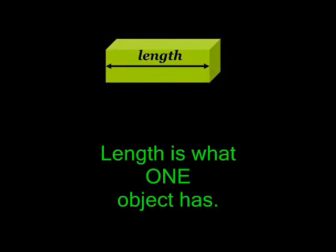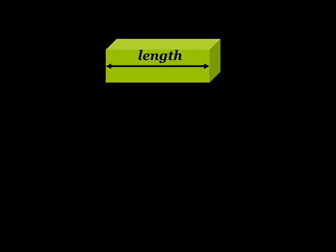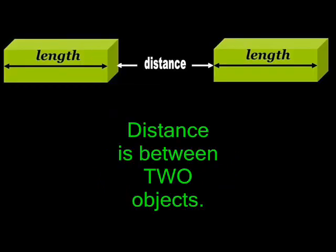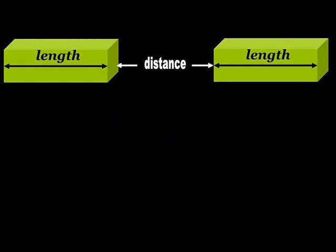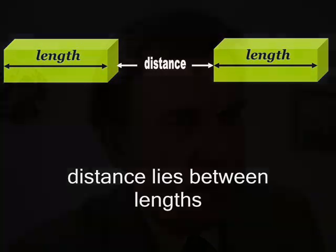For the purposes of science, length is what one object has — the continuous matter lying between two surfaces. Conversely, the word distance alludes to the space that lies between two objects: the space separating two surfaces. A handy one-liner that synthesizes these two notions is: distance lies between lengths.